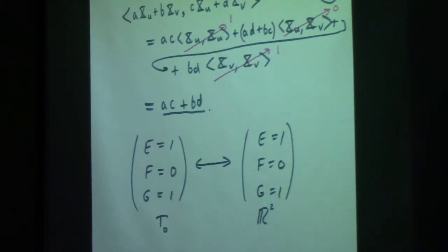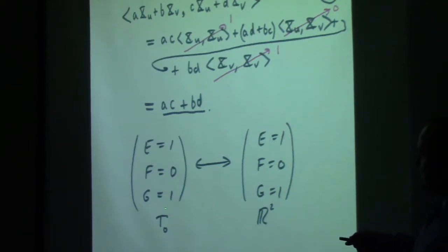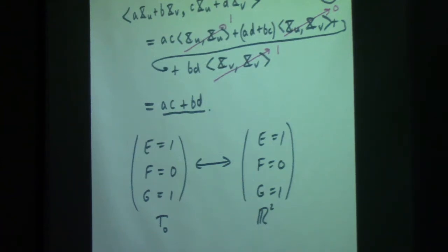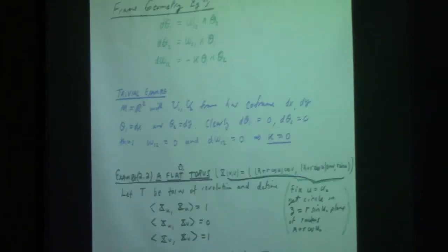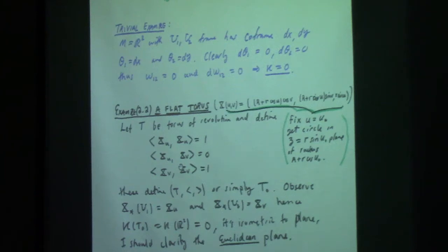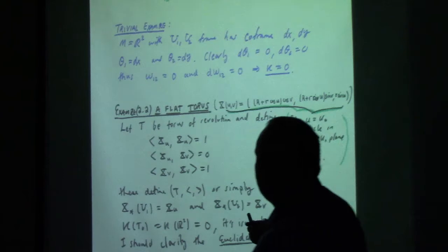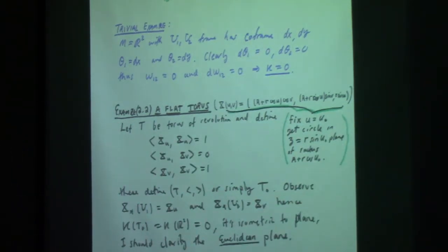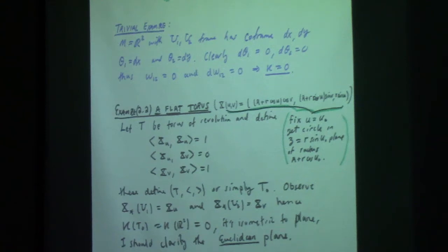I'm about to use E equals 1, F equals 0, and G equals 1 to define a non-standard metric on the torus T₀. This is not the torus we've talked about before. The plane has frame field u1, u2 — the Cartesian frame. The co-frame is dx, dy. So d theta 1 is 0, d theta 2 is 0, which means omega 1,2 is 0, which means d omega 1,2 is 0, which means the Gaussian curvature is 0. The plane has curvature 0.